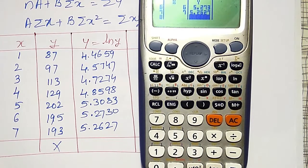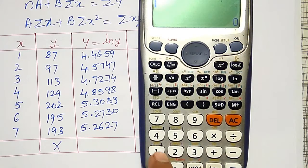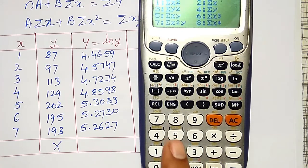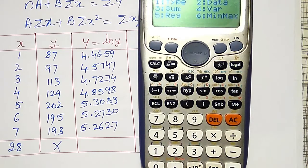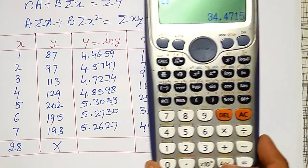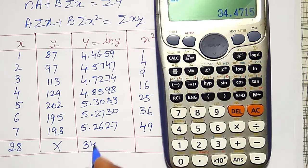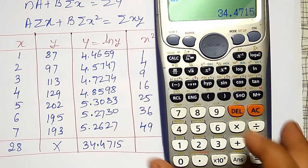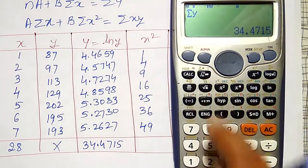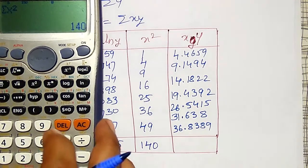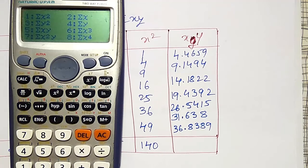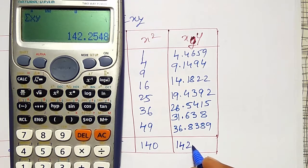X and y values are entered. Then to find summations, press AC button — the data will be saved. Summation of x: Shift 1, Sum 3, option 2 — I get 28. Summation of capital Y: Stat 3, option 4 — I get 34.4715. Summation of x²: Shift 1, sum x² option — I get 140. Summation of xY: Shift, Stat, 3, option 5 — I get 142.2548.